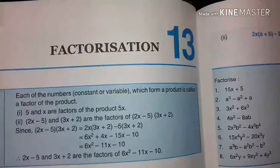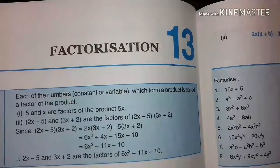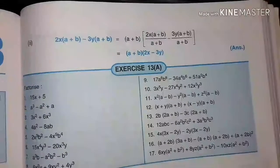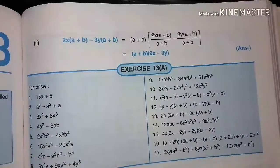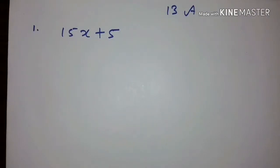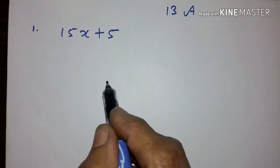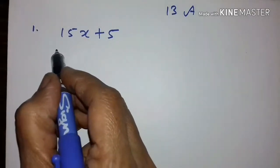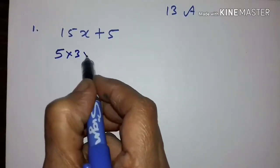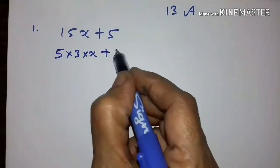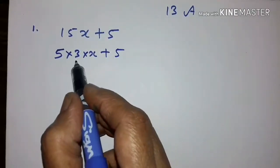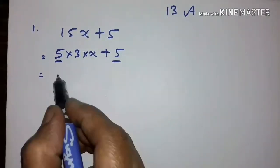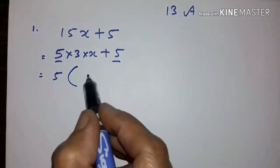Hello students, welcome to my channel Easy Easy Maths. Let us start factorization Exercise 13A, Concise Mathematics 8th class. The first problem is 15x plus 5. The first step in factorization is taking out the common factor. This is 5 into 3 into x plus 5. In these two terms, 5 is common, so we have to take it out.